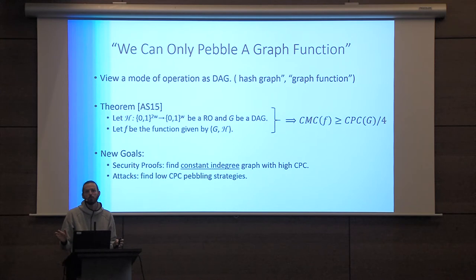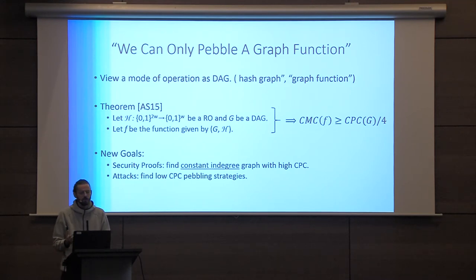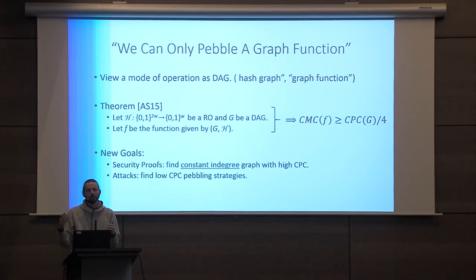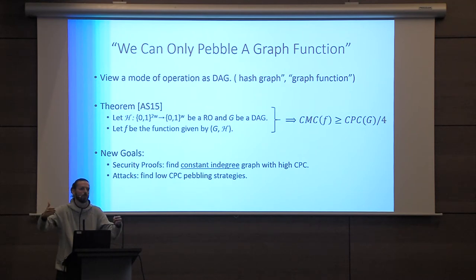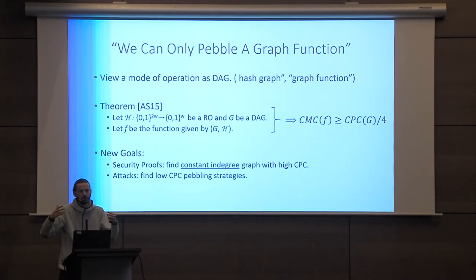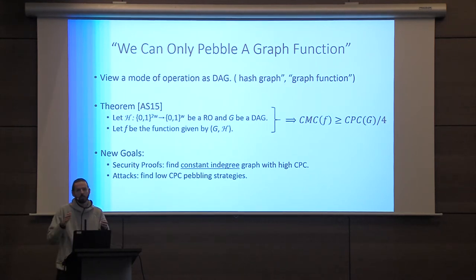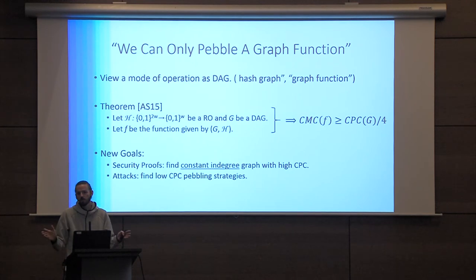Given this theorem, we have two goals: attacks and security proofs. For security proofs, we're looking for a constant in-degree graph with high CPC. The reason for constant in-degree is we're looking at a mode of operation over a compression function — in the random oracle model, when you call your round function you must have everything in memory at once, and we don't want too large inputs so the random oracle model remains practically relevant when replaced with a cryptographic hash function. The fully connected DAG would have as good CPC as you could hope, but we need constant in-degree. Indeed, all practical constructions are constant in-degree.